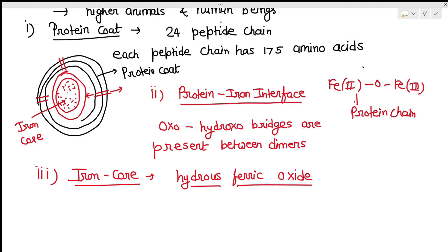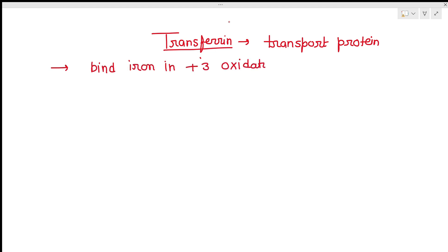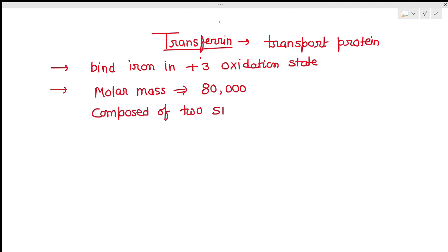Now see the second important compound, transferrin. Transferrin is a transport protein involved in the transport of iron. Iron binds here in the form of Fe³⁺. Its molar mass is 80,000, and it is composed of two units. These two units are similar but not identical, and transferrin can bind only to Fe³⁺ ions.